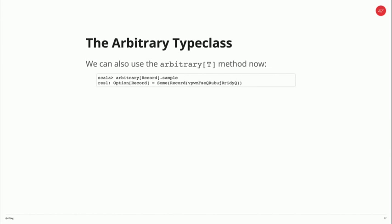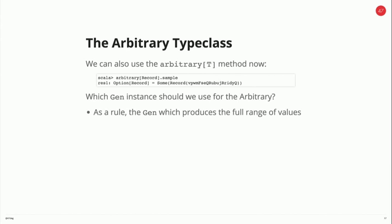If you look at the implementation for forAll, there's an implicit parameter which expects an arbitrary for the type. So here, as long as the compiler can find the implicit arbitrary for records, the test will generate records for us. There's almost a clash between generators where we can have lots of different generators for the same type, but generally you only want one arbitrary or one implicit for a given type. As a rule, you want to have the generator that produces a full range of values. If your type accepts negative numbers but your arbitrary only ever produces positive numbers, there's a whole class of data missing from your tests.